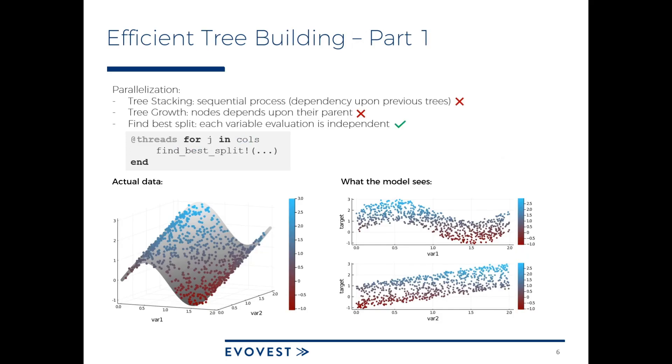How to build a tree efficiently? Parallelization is an obvious choice for speeding things up, but we cannot apply this everywhere in the algorithm. Unlike Random Forest, for example, we cannot build our trees simultaneously. The choice that has been made here is to parallelize the selection of the best variable on which to apply the split.